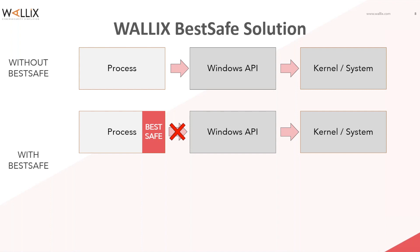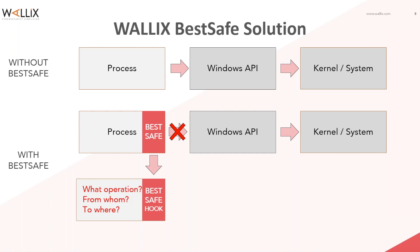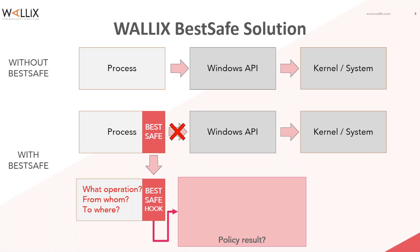Then it applies a specific set of security rules to establish what happens next. If the process is legitimate, BestSafe allows it to continue its execution and make its API calls. If it appears to be dangerous or potentially malicious, then BestSafe blocks the process before it runs and prevents it from executing any API calls.